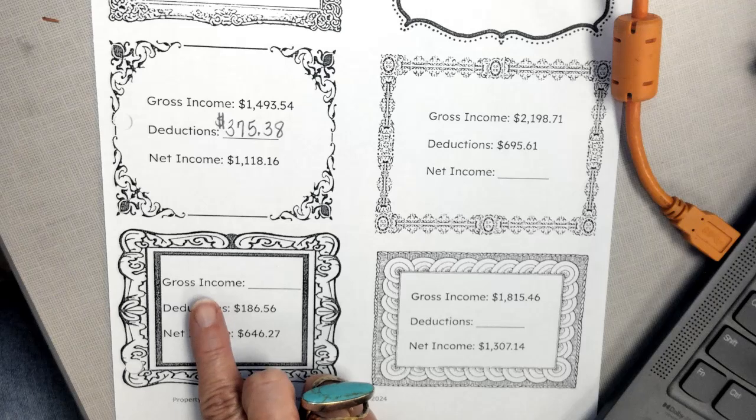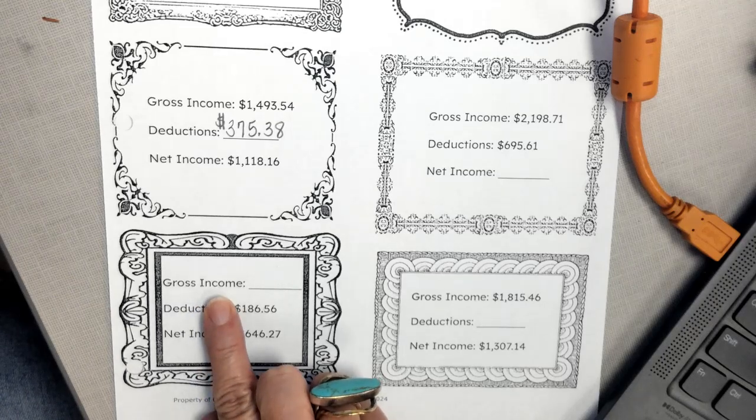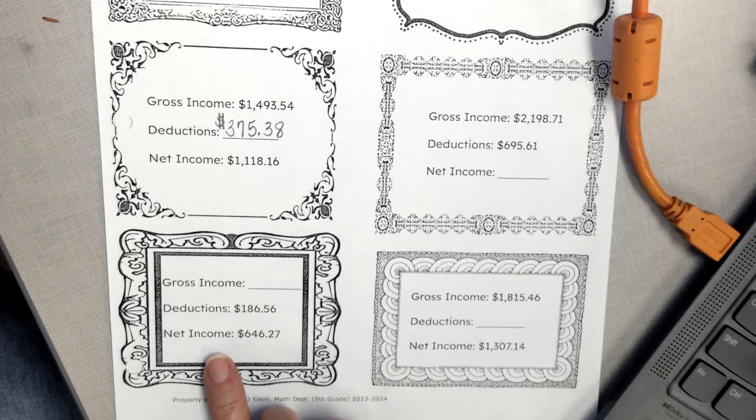All right, our last problem is this last one on the left-hand side where we're left to find the gross income. We have the deductions, we have the net.